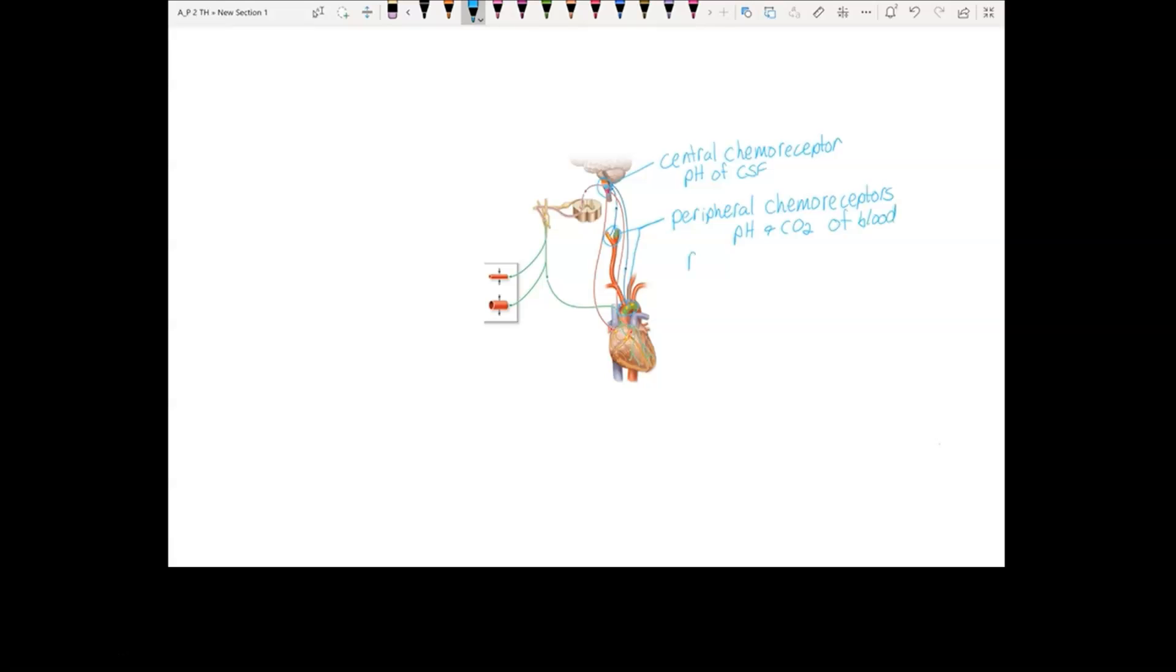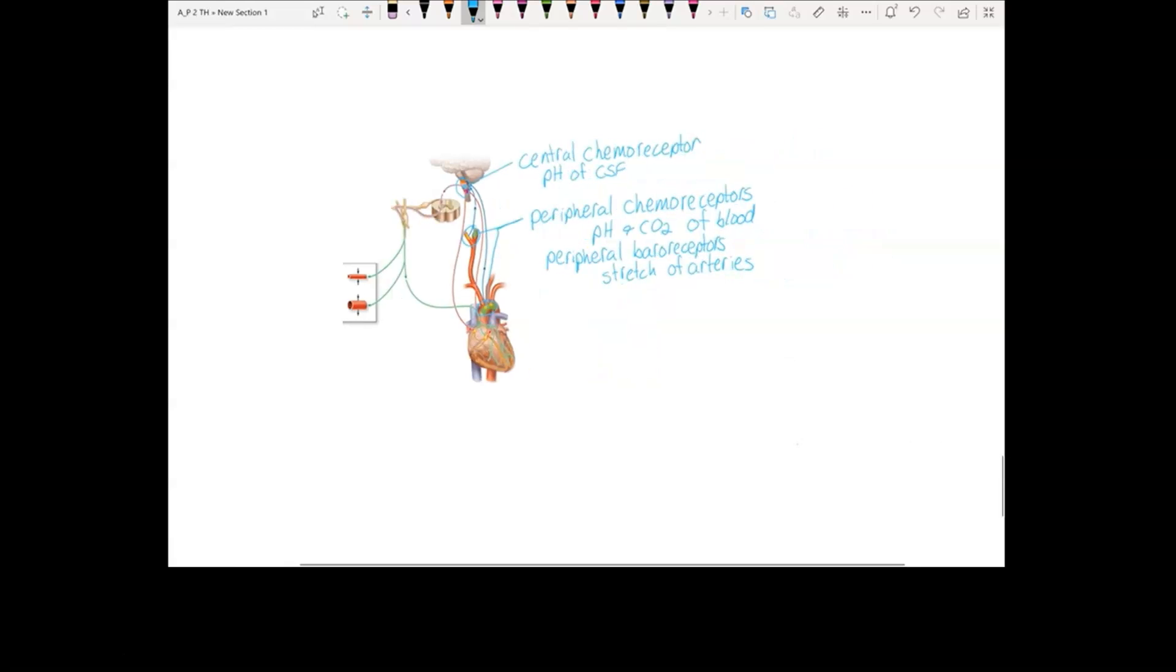You also have the peripheral baroreceptors, which tell you how much these arteries stretch. All of this information is used by the medulla oblongata to decide how it should regulate blood pressure.